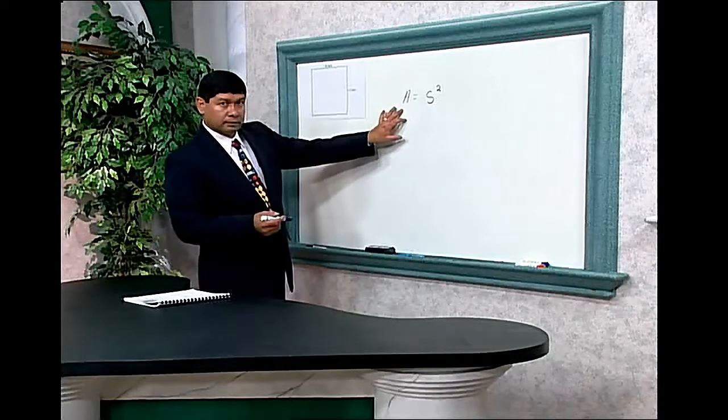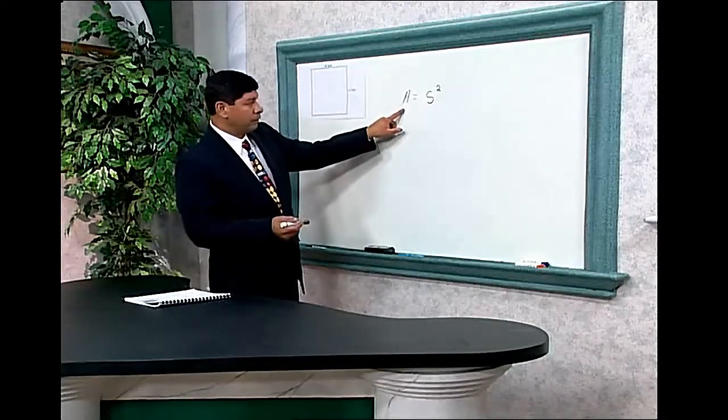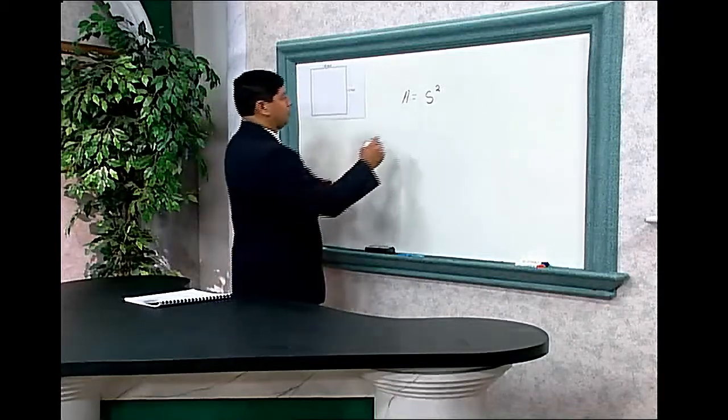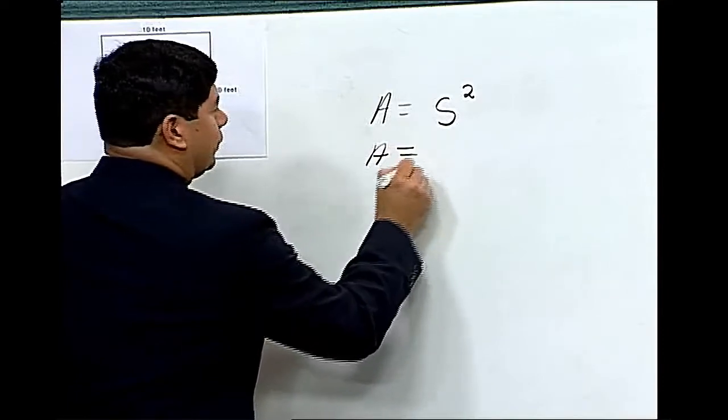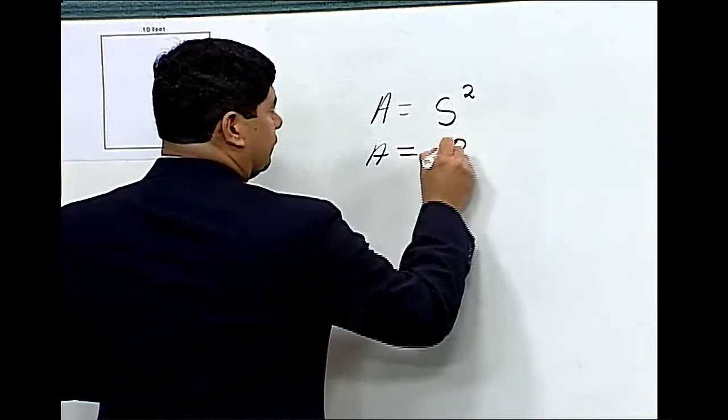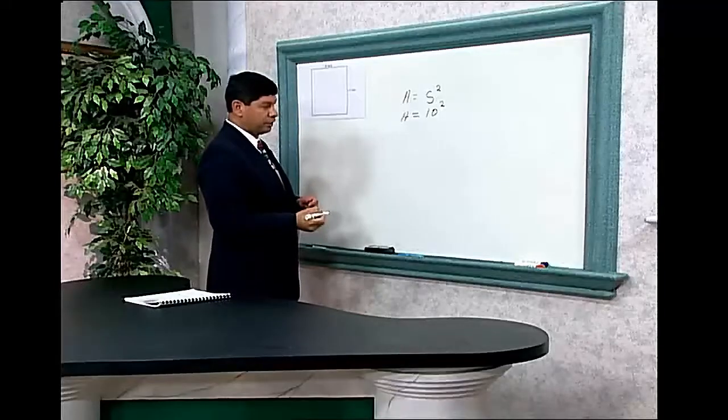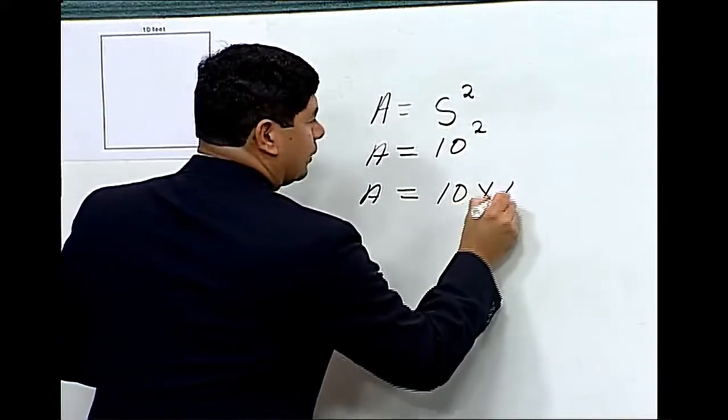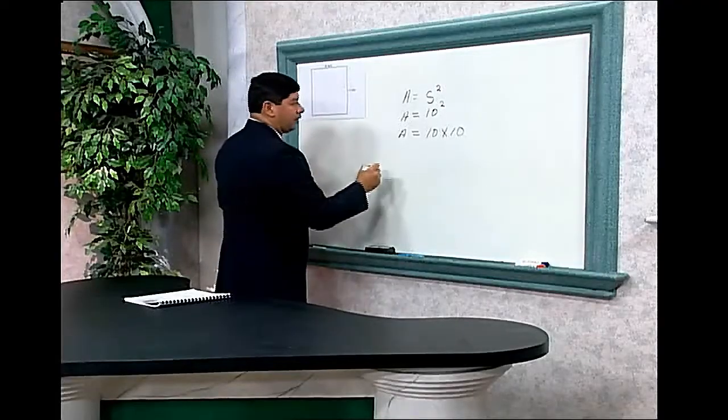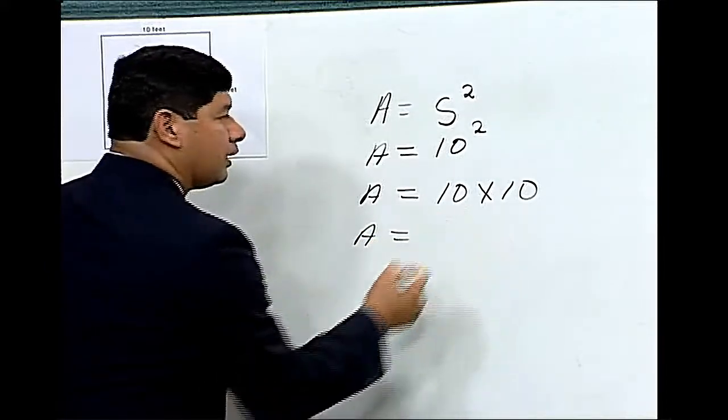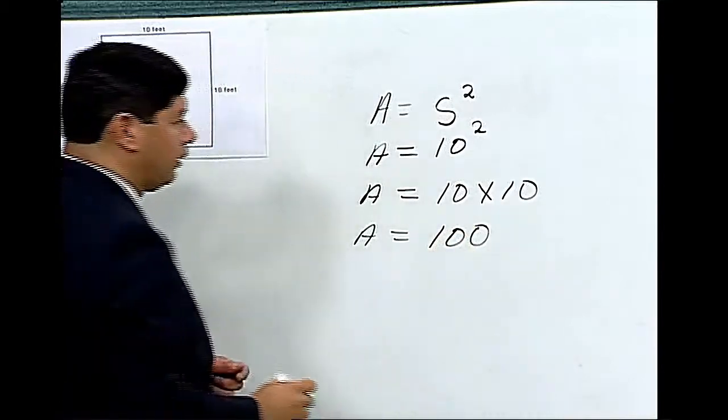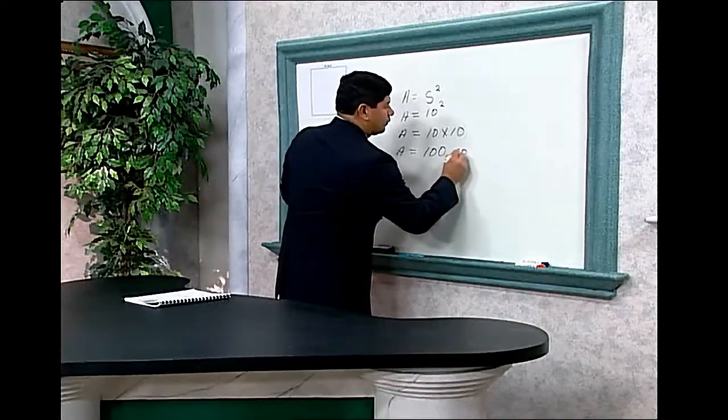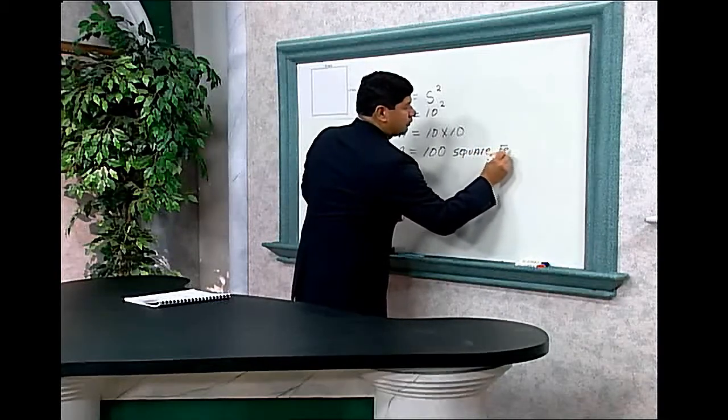Our formula for finding the area of a square is A equals the length of one side squared or to the second power. So the area would equal 10 feet squared to the second power. This is the same as 10 times 10 or 10 to the second power. The area equals 10 times 10 is 100. So the area of a room whose length of one side is 10 feet would equal 100 square feet.